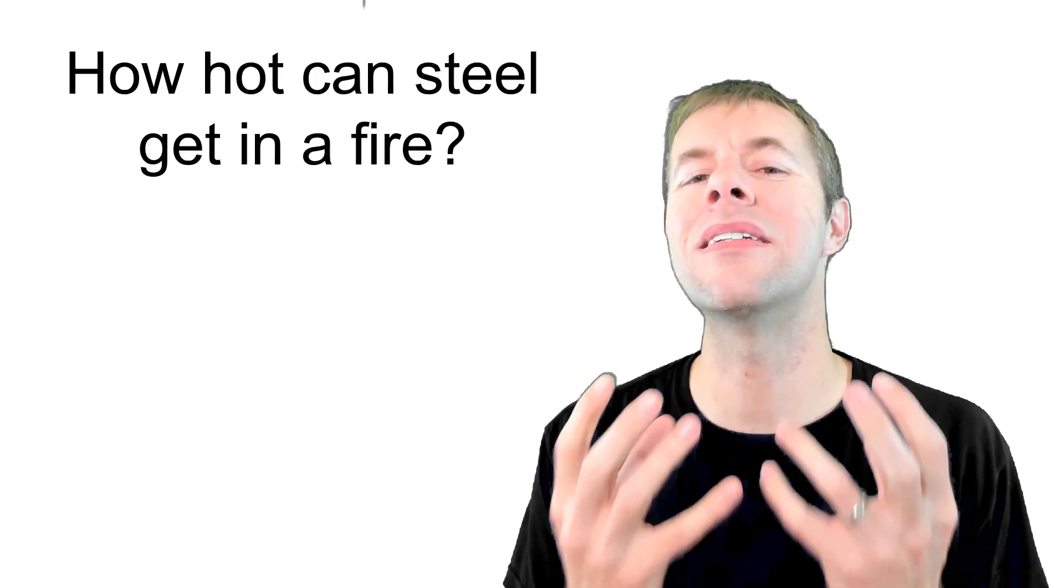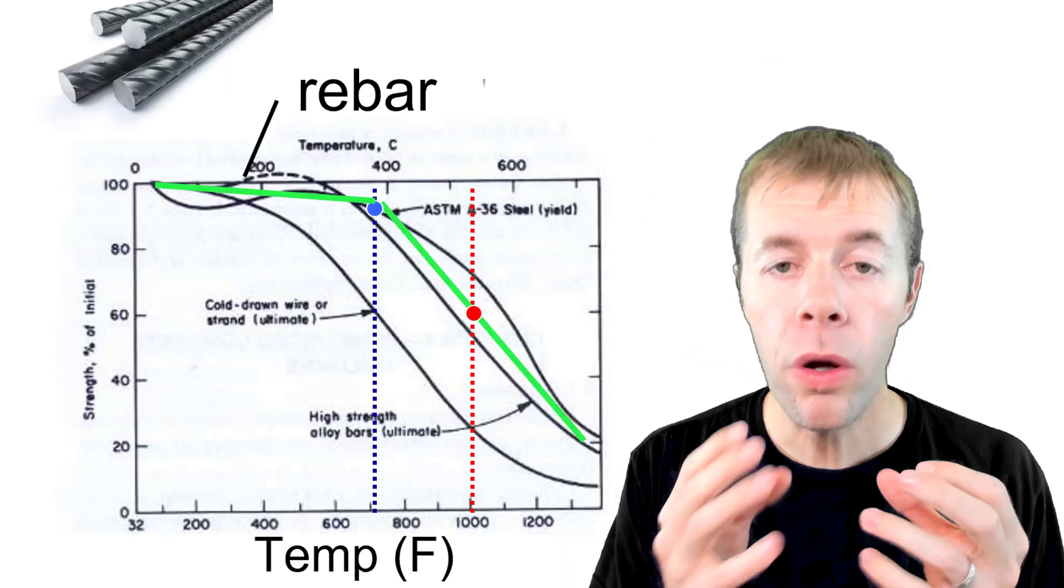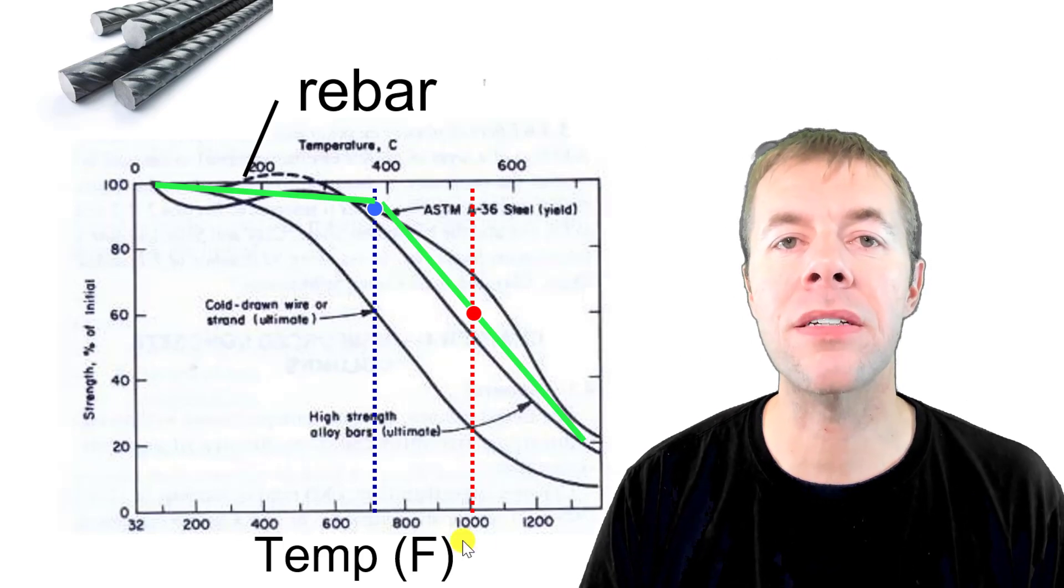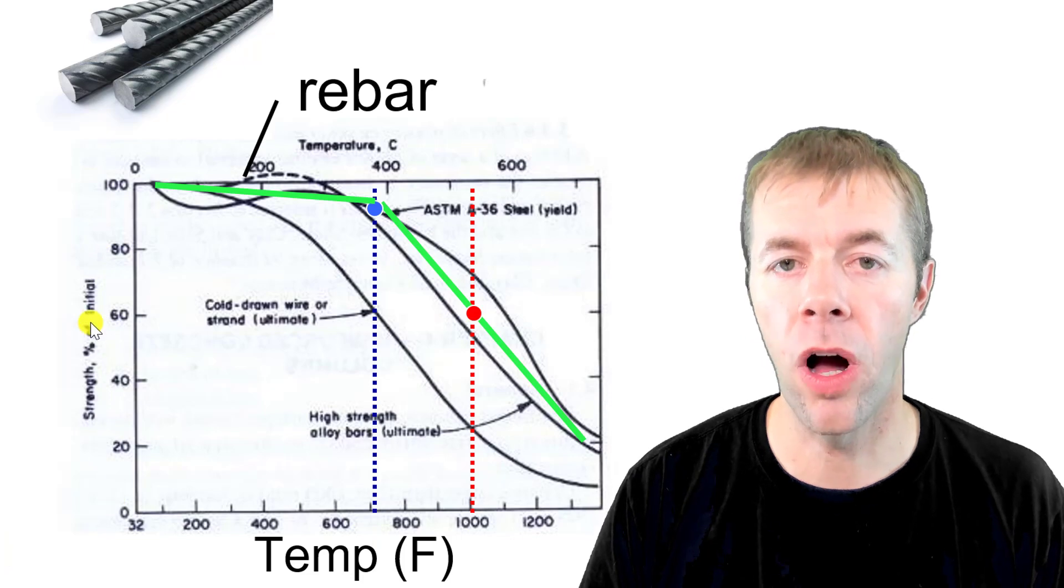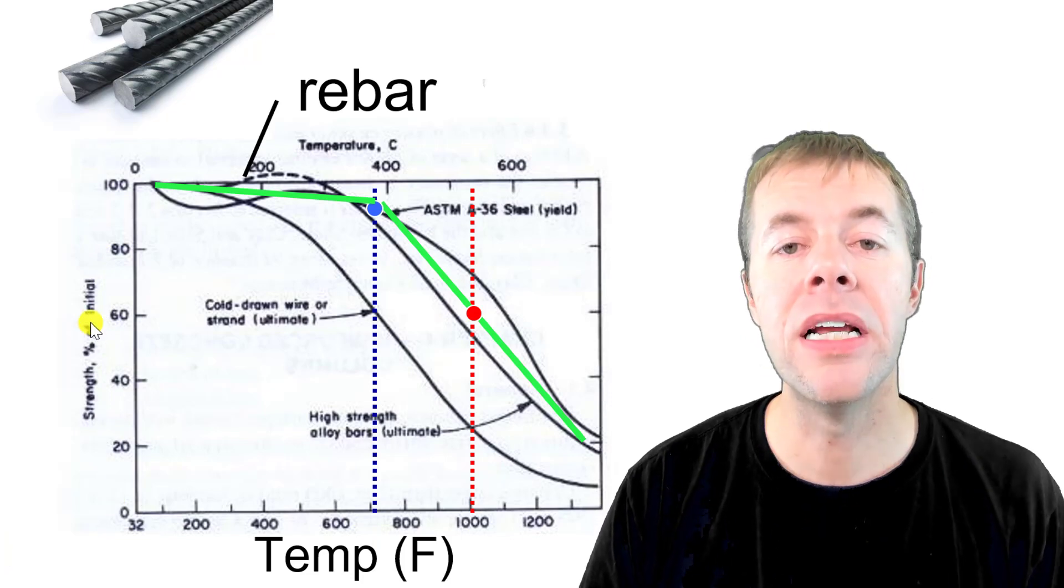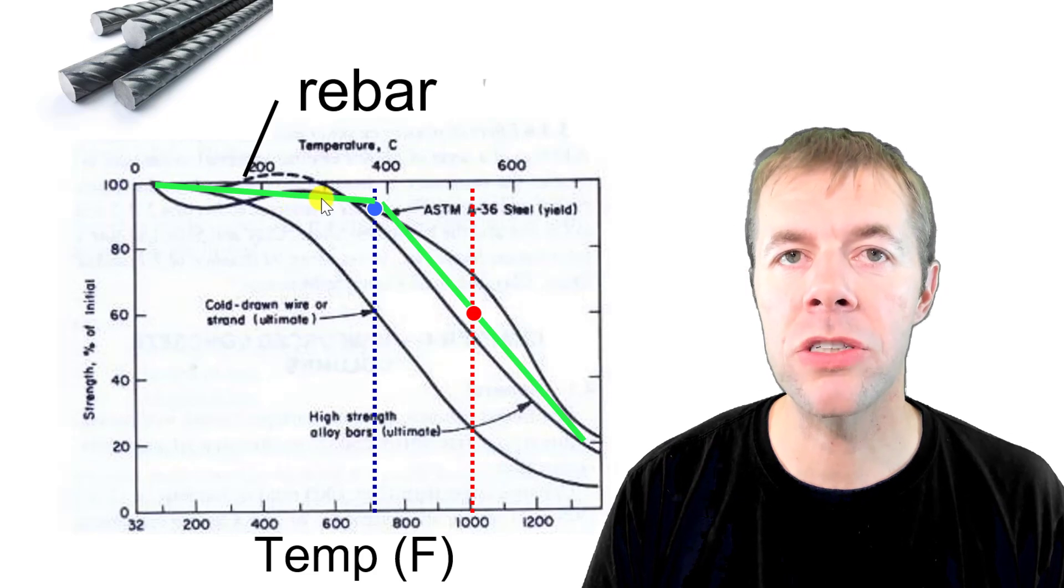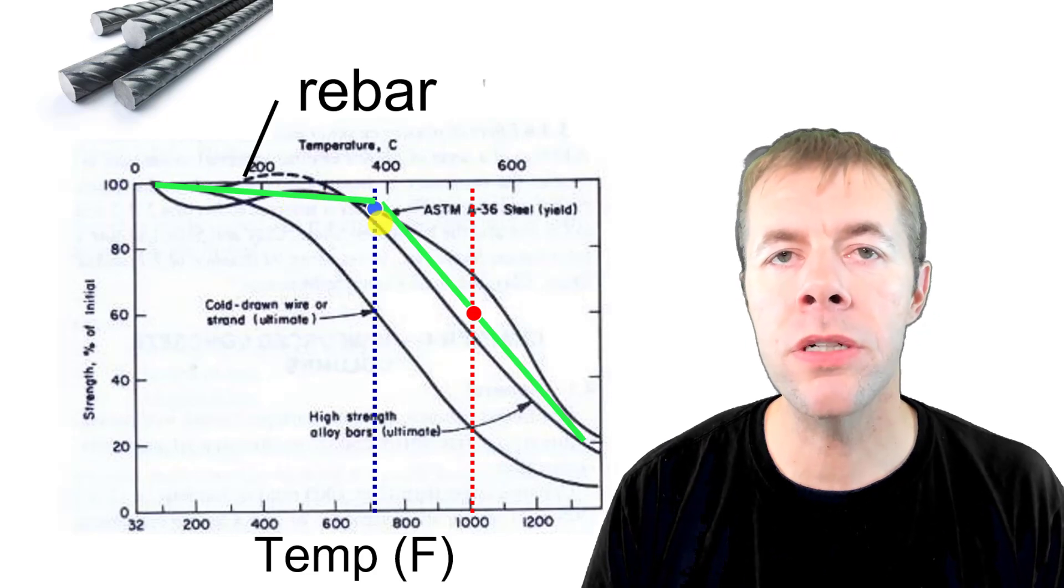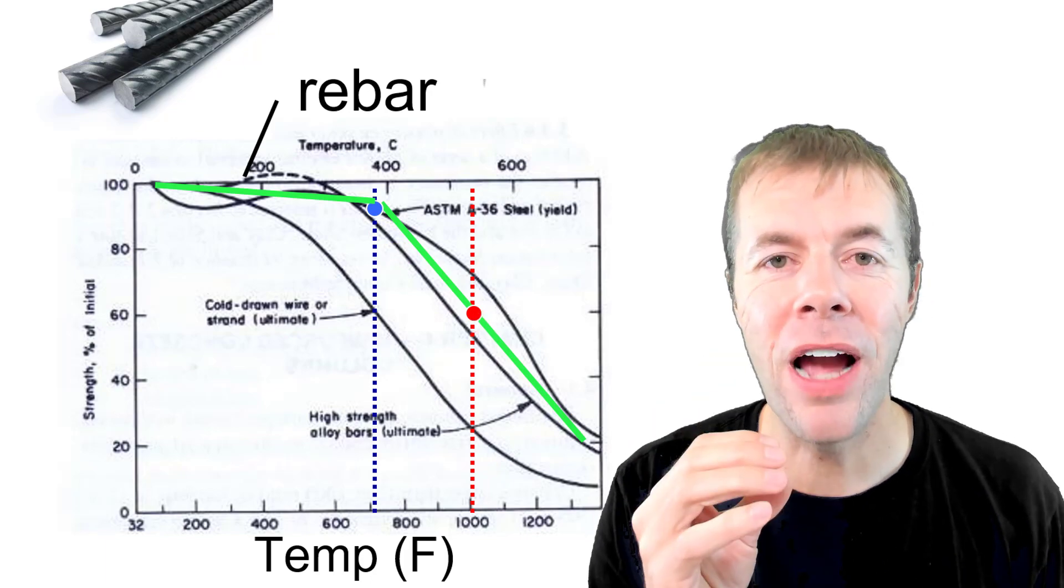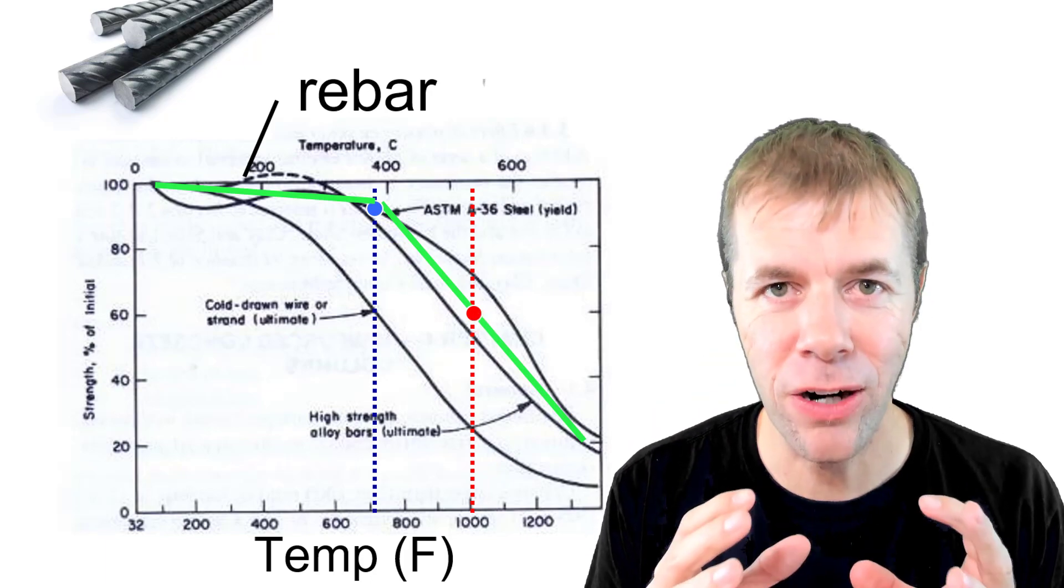So how hot can steel get in a fire? Well here's a very cool plot. It shows temperature on the x-axis and shows the percent loss in strength on the y-axis. This green line is just for rebar. When things get up to about 700 degrees Fahrenheit, there's literally no loss in strength. But all of a sudden it starts to drop. When you get to a thousand degrees Fahrenheit, you've used up your entire safety factor. As in the load that the concrete is designed for is probably going to be enough to cause the bridge or the structure to collapse.